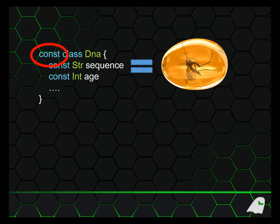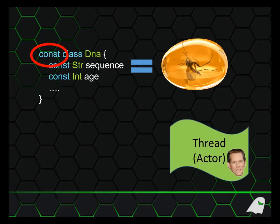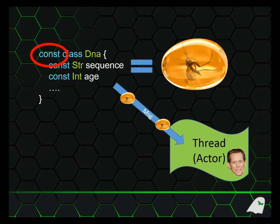Concurrency in Phantom uses the actor paradigm, just like the Akka framework in Java. Each thread runs inside its own actor, and the only way to communicate with an actor is to pass it messages. There is no mutable state, no volatile syncing, and no double-checked locking mechanisms either. Just message passing. And in Phantom, the only messages you can pass to an actor are immutable classes.